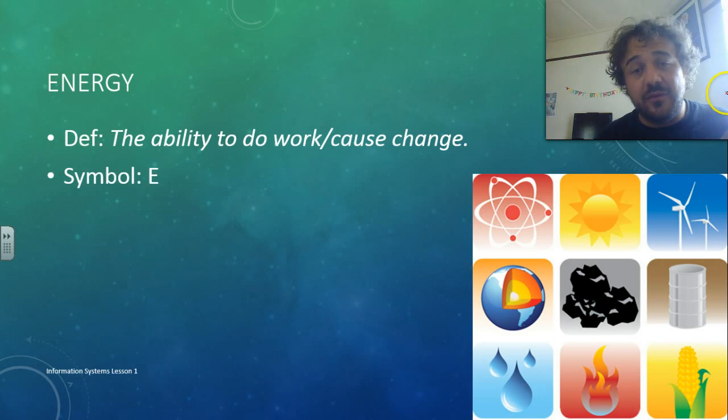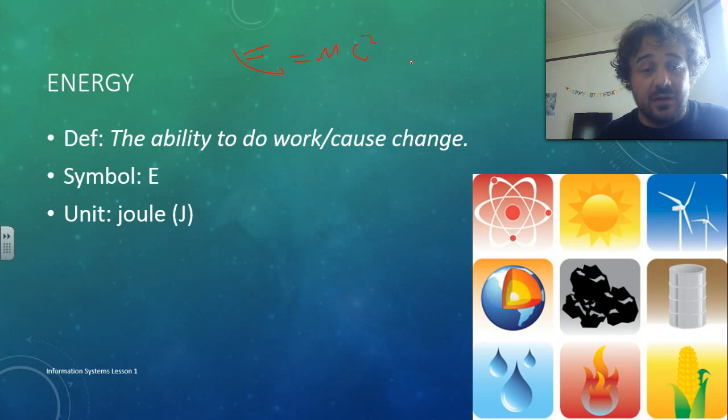So, the symbol for energy is E. When we see this formula, the E equals energy, okay? The unit is the joule, so that's the metric unit, the SI unit is joule, which doesn't have a capital, but it has a capital J for the symbol for the unit.